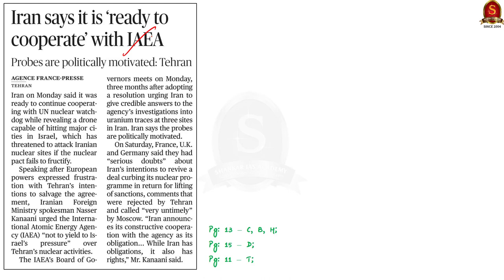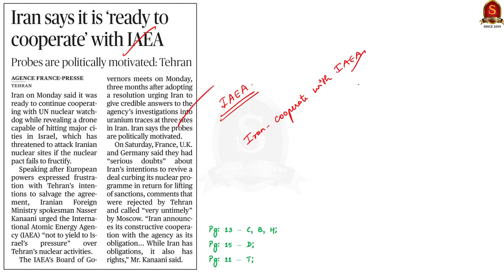This article speaks about the International Atomic Energy Agency, shortly referred to as IAEA. This agency is in the news because Iran said in a press note that it is ready to cooperate with the IAEA regarding its nuclear activities. In this context we will learn about IAEA, its formation, its purpose and the member countries.